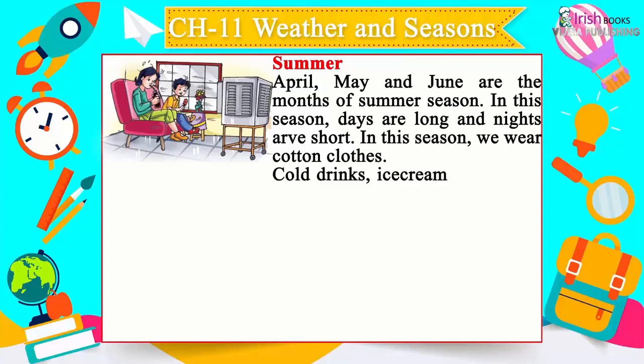Autumn season follows the rains and comes before winter. September and October are the autumn months. This is a short season — neither too hot nor too cold. This season is dry and windy, and it changes the weather condition from hot summer to cold winter.